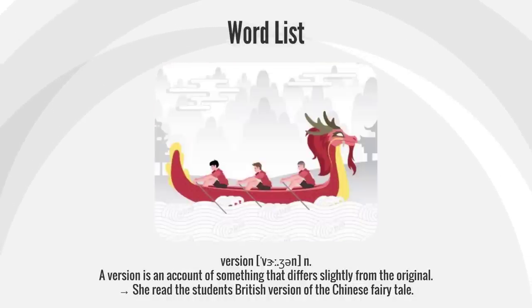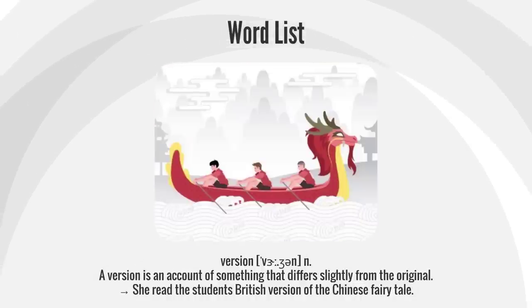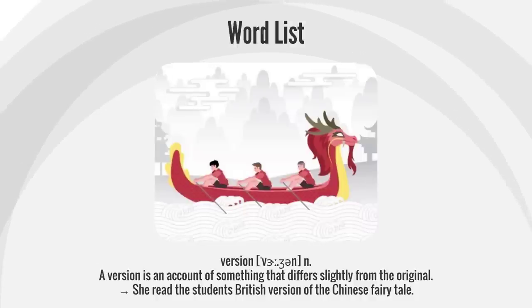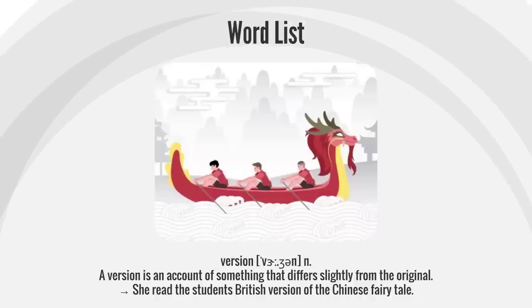Version. A version is an account of something that differs slightly from the original. She read the student's British version of the Chinese fairy tale.